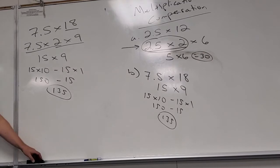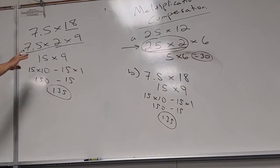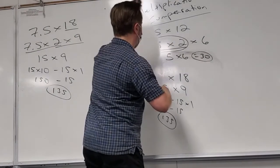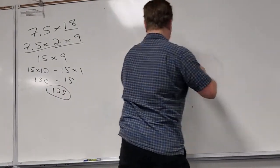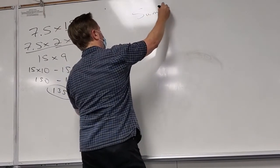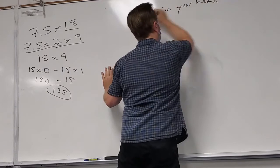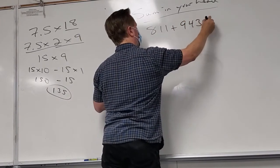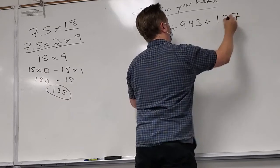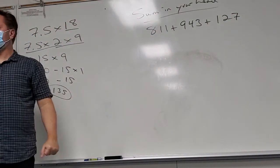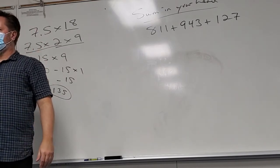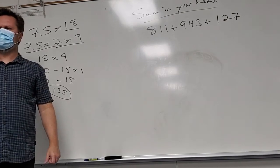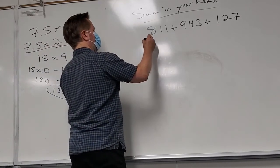Here's some not-so-technical mental math: if you had to do 811 plus 943 plus 127 in your head, one approach is to separate hundreds and remaining digits. 800 plus 900 plus 100 is 1800, then add 11 plus 43 plus 27: eleven plus 43 is 54, plus 27 is 81. So the answer is 1881.